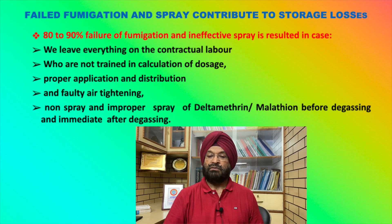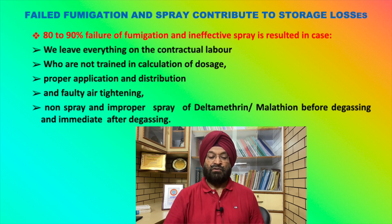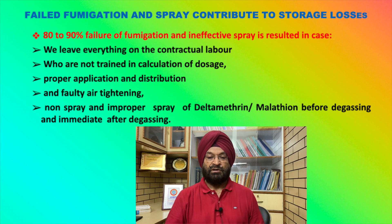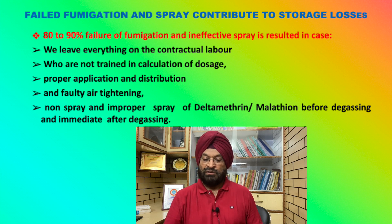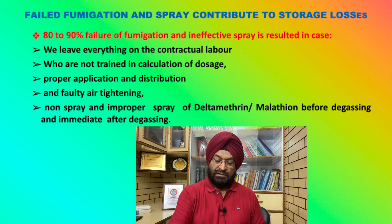According to my experience, fumigation and spray are the main causes of 80 to 90 percent of storage losses. Fumigation is ineffective because we leave everything to contract labor who are not experts, are not trained, and cannot calculate the correct dose or know proper distribution. Faulty air-tightening, failure to spray Deltamethrin and Malathion before and immediately after degassing — all these lead to more losses.